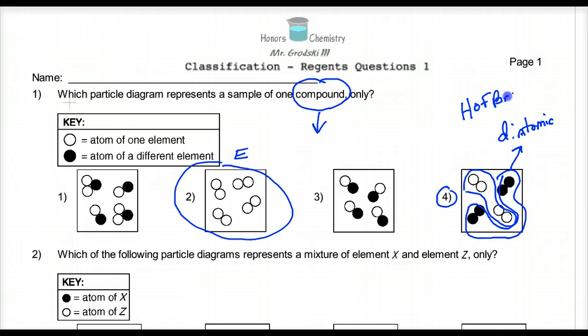Diatomic elements are the HOFBrINCl. HOFBrINCl are elements that bond to themselves. For instance, hydrogen which is the H, oxygen is the O, F is fluorine, Br is bromine, I is iodine, N is nitrogen, and Cl is chlorine. HOFBrINCl is a mnemonic I've made up just to remember those elements that love to bond to themselves.